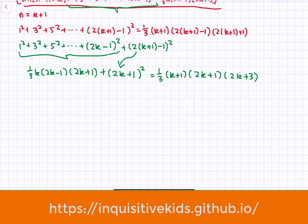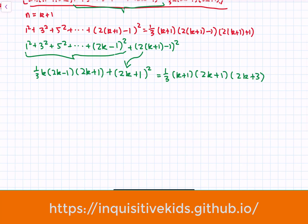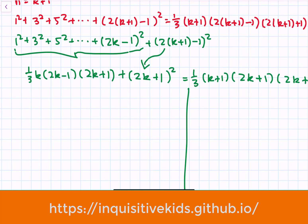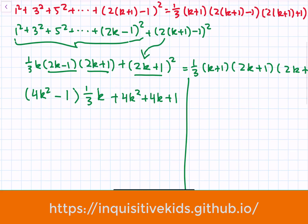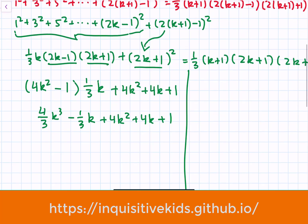Continuing to simplify the left side: 2k plus 1 times 2k minus 1 is the same as 4k squared minus 1. So we have one-third k times 4k squared minus 1, plus the perfect square 2k plus 1 squared, which expands to 4k squared plus 4k plus 1. Continuing to simplify, we get four-thirds k cubed minus one-third k plus 4k squared plus 4k plus 1, which combines to give us four-thirds k cubed plus 4k squared plus eleven-thirds k plus 1. The left side is now fully simplified.